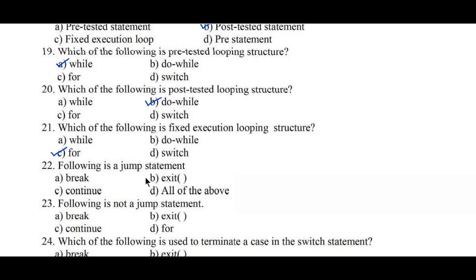Question number twenty-two: which of the following is a jump statement? Option A: break, B: exit, C: continue, D: all of the above. Break, exit, and continue are all jumping statements, so option D, all of the above, is the right answer. Question number twenty-three: which of the following is not a jump statement? Option A: break, B: exit, C: continue, D: for. The for loop is an iterative statement, not a jump statement. Hence option D is the correct answer.